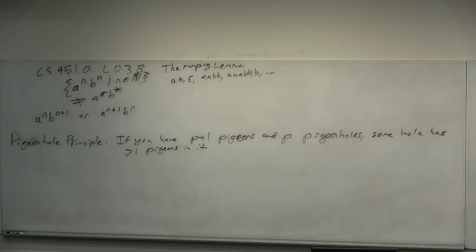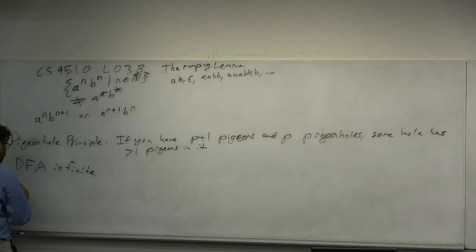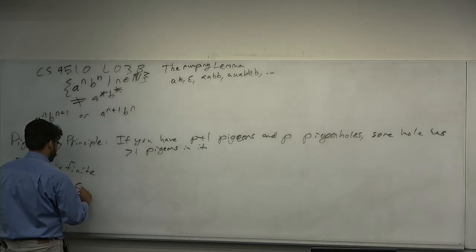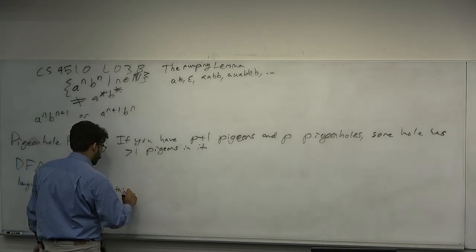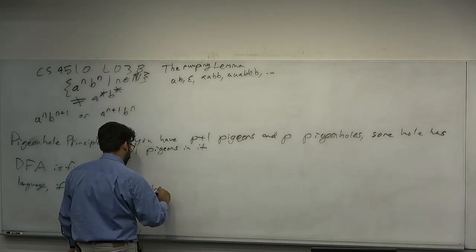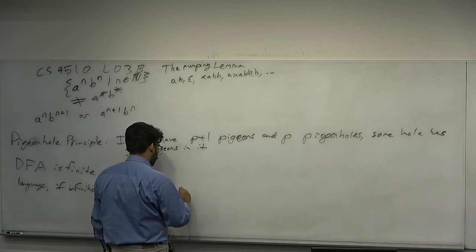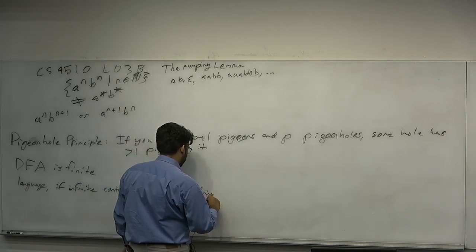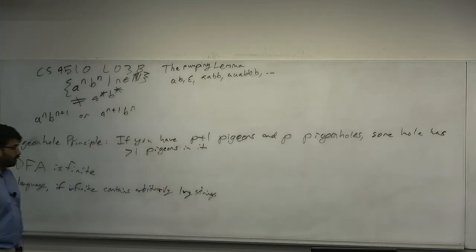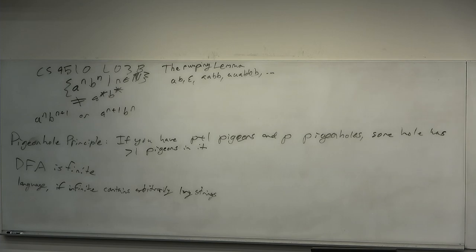A DFA is a finite object, but a language, if it's infinite, contains arbitrarily long strings. A language is finite if there's a longest string; if it's infinite, there is no longest string — there are infinitely many strings of arbitrarily long length. Consider this language: it certainly has strings of arbitrary length.